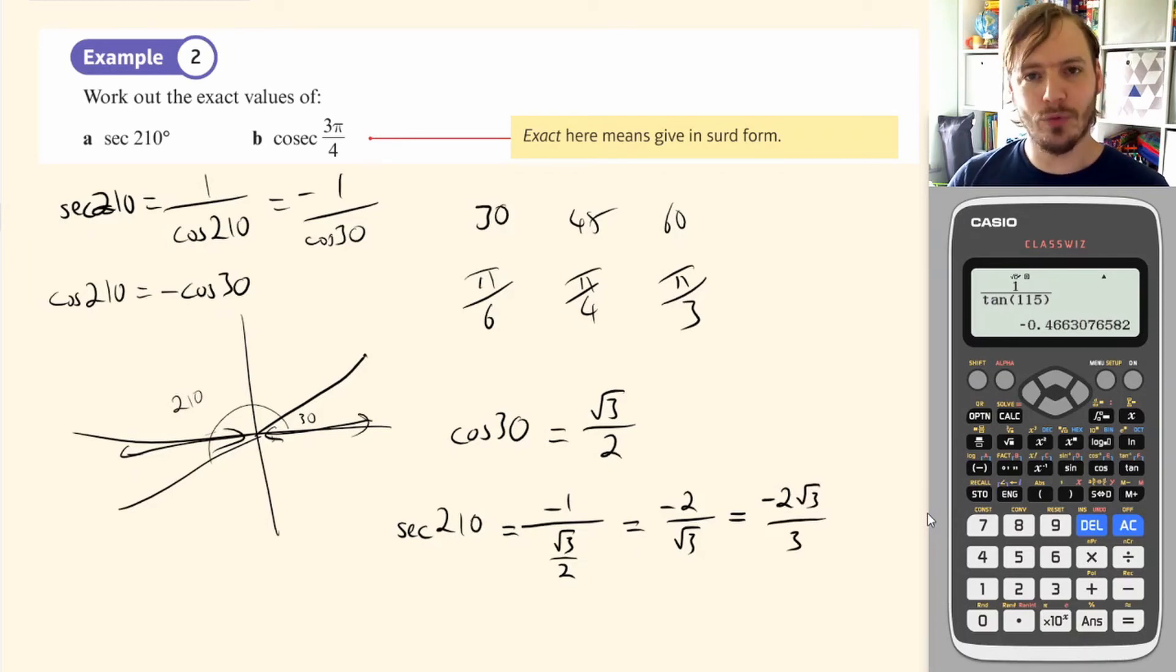Now, I've done all of that by hand without the use of a calculator. Clearly, the other way I could do this is just to type in 1 over cos of 210. And lo and behold, it's negative 2 root 3 over 3.